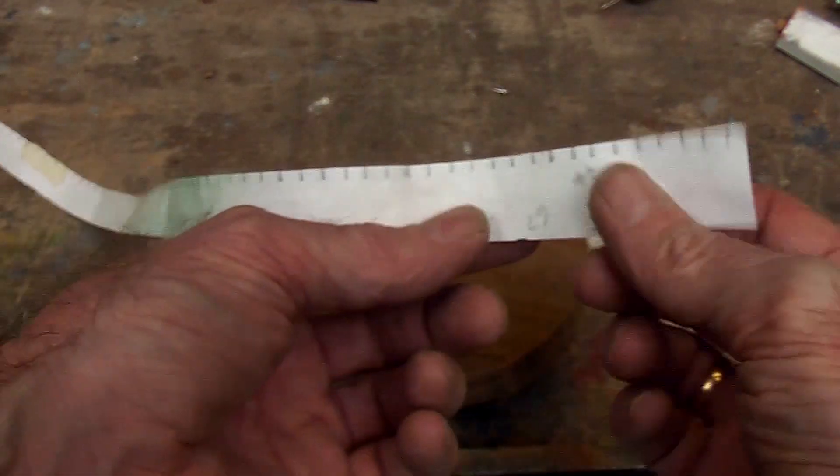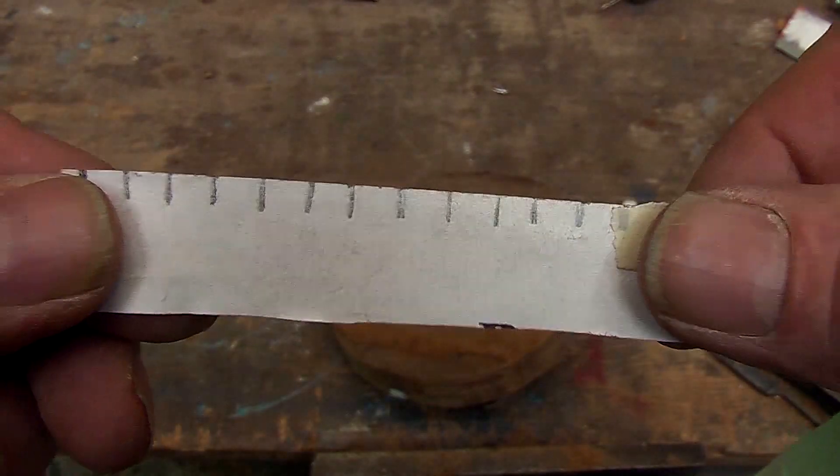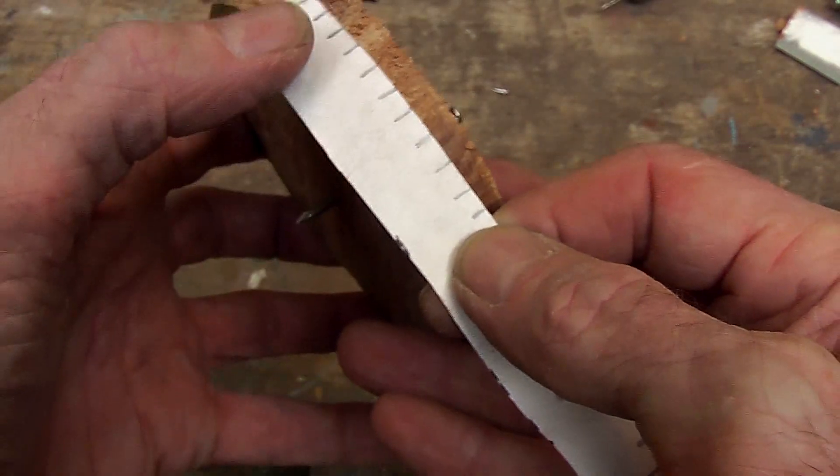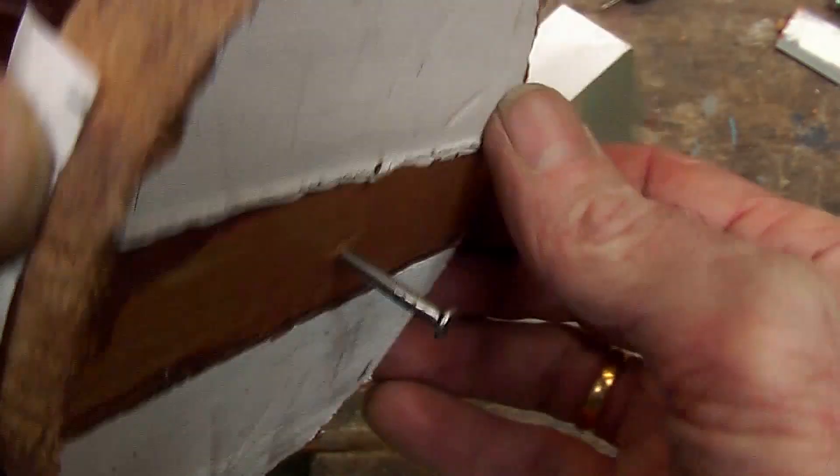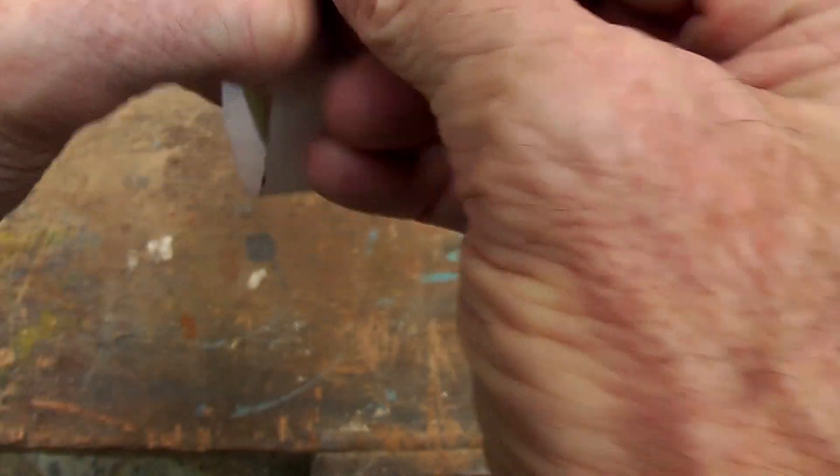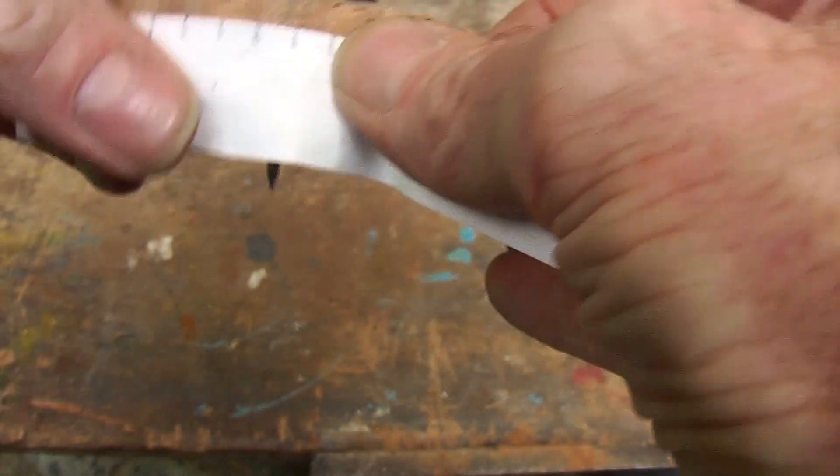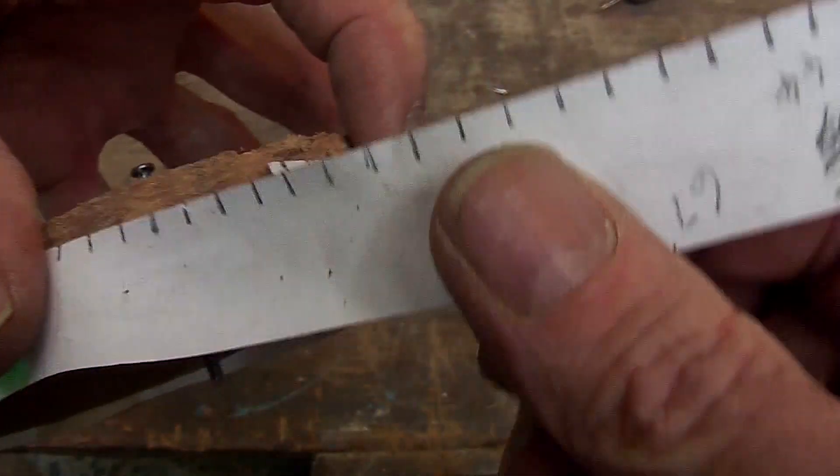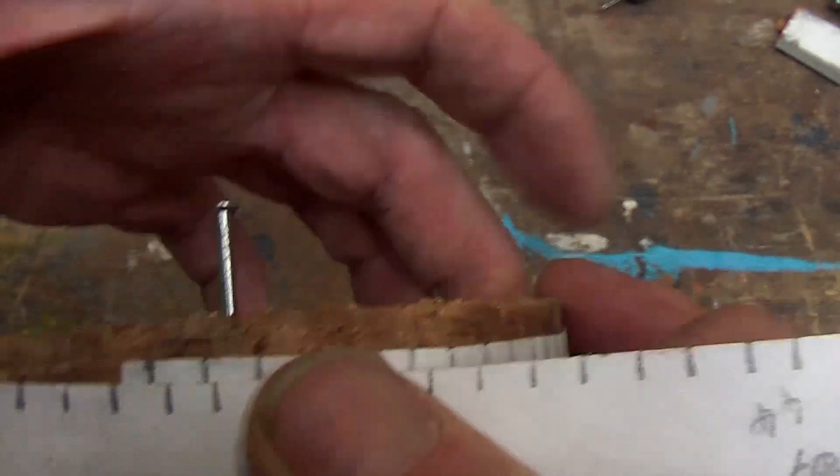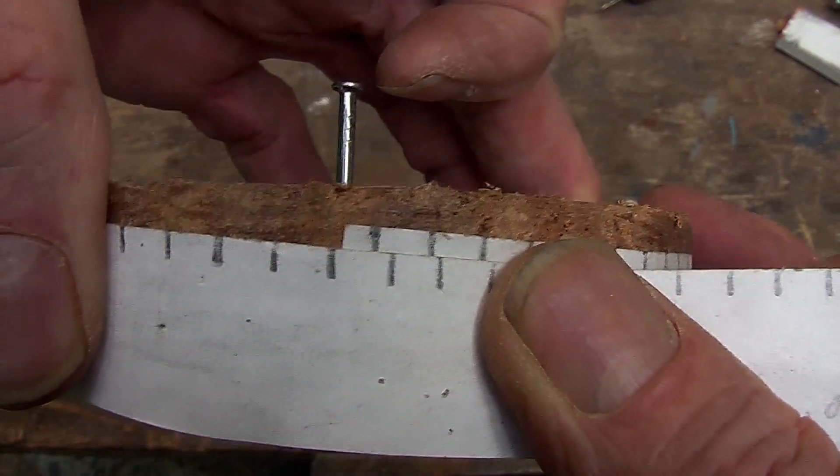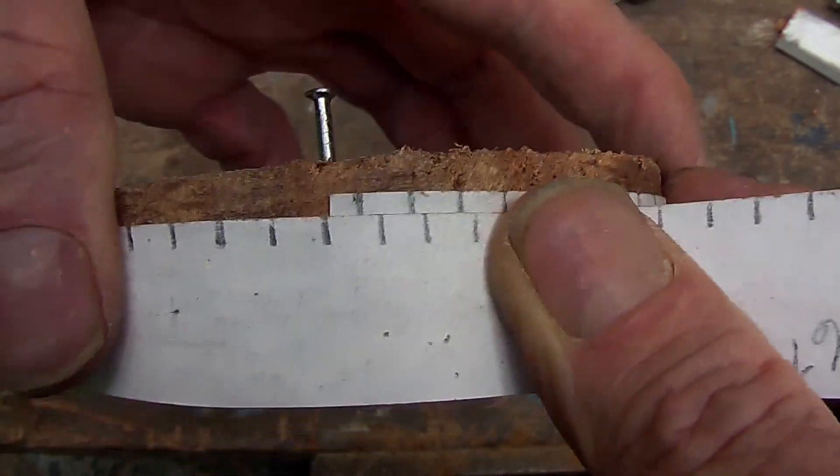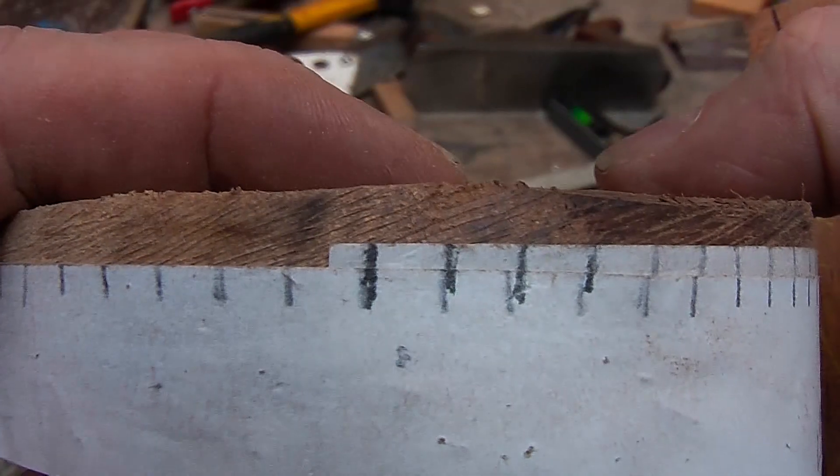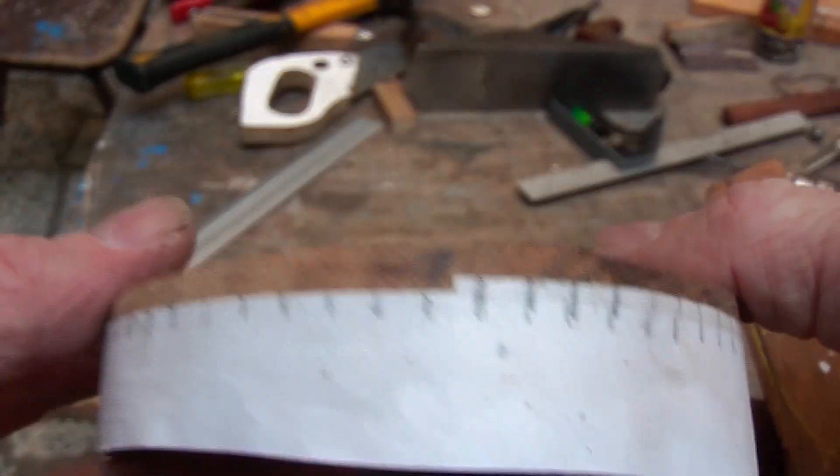Now we are going to take the strip of paper that we did with the 6mm increments on and wrap it around the wheel to see how close we are to the diameter that we are going to need so that we can get the teeth perfectly spaced. I can see we are at half a tooth out so I am going to have to shrink it just a little bit so that those lines line up. And there we have it lined up.